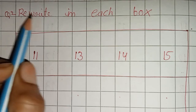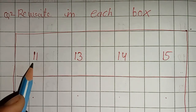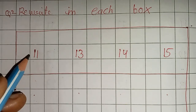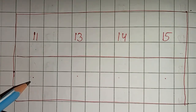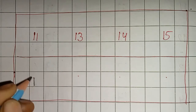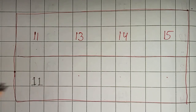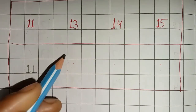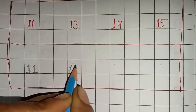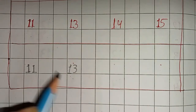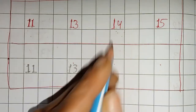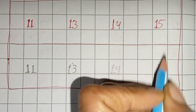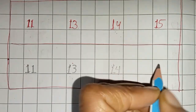अब next question है: rewrite in each box. इस box में कुछ numbers लिखे हुए हैं, इन numbers को देखकर नीचे वाले box में आपको same number write करना है। जैसे यहाँ 11 लिखा है, तो नीचे 11 लिखेंगे। Next 13 — नीचे वाले box में one, three, 13 लिखेंगे। Next 14 — नीचे वाले box में same 14 लिखेंगे। Next 15 — नीचे वाले box में one five, 15 write करना है।